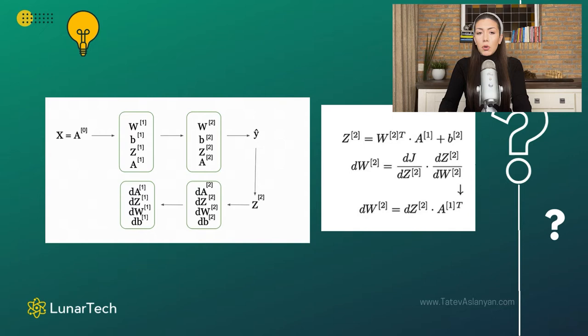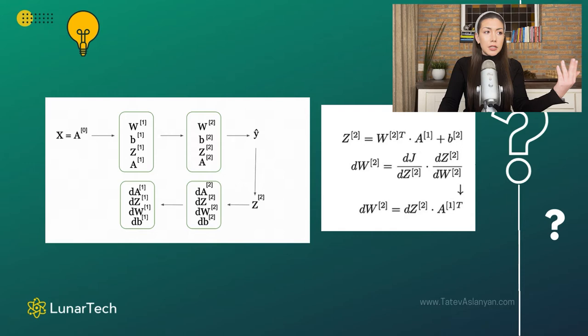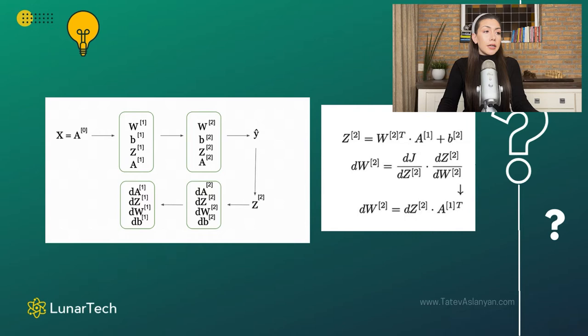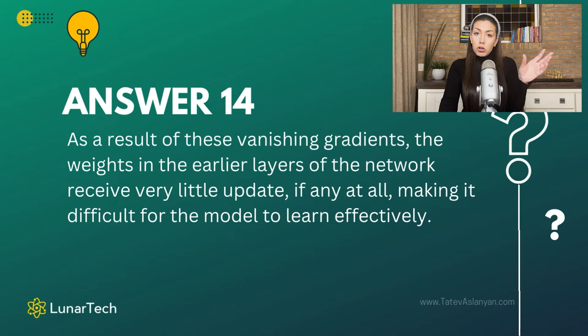The problem is that we are performing all these transformations and cumulatively multiplying those values each time. In some cases, especially with deep networks with many hidden layers, by the time the network propagates from deep layers through the middle layers and then to the earlier layers, after the multiplication of many of these weights, the gradient starts to become very close to zero. When the gradients become very close to zero, there is nothing left to update our weights and bias parameters with, and the network is no longer able to properly learn, especially in the earlier layers.